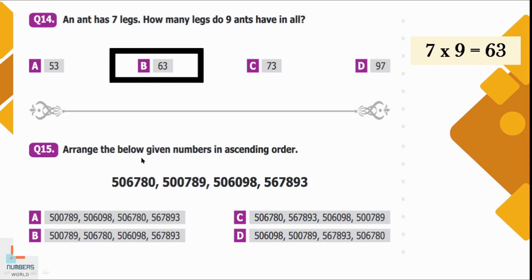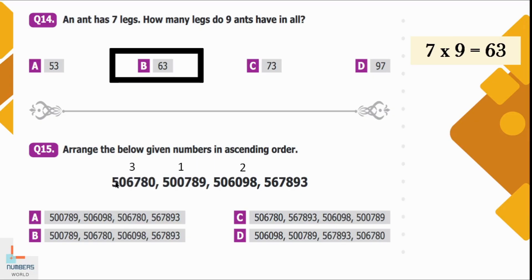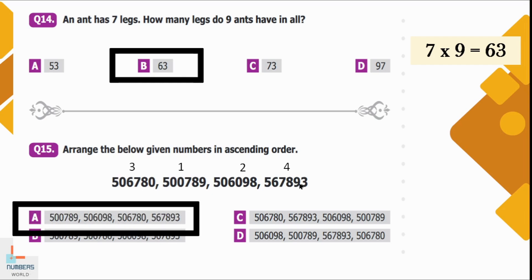Question number 15: Arrange the given numbers in ascending order — ascending means smallest to greatest. The smallest number is 500,789. The second number is 506,098. The third number is 506,780. The greatest number is 567,893. Option A is the correct option.